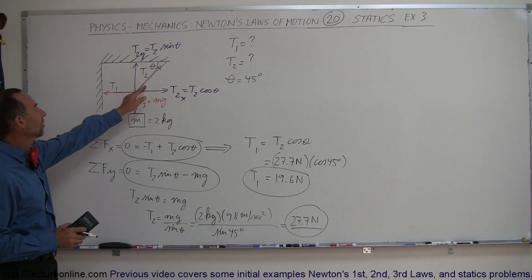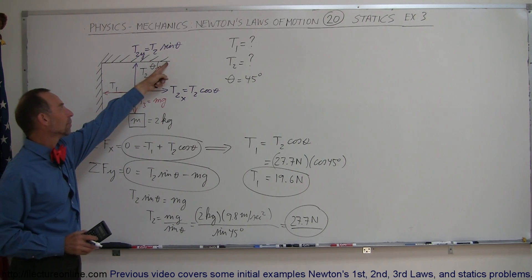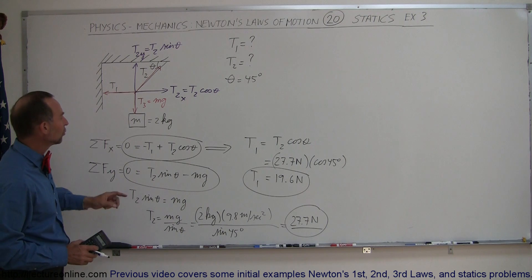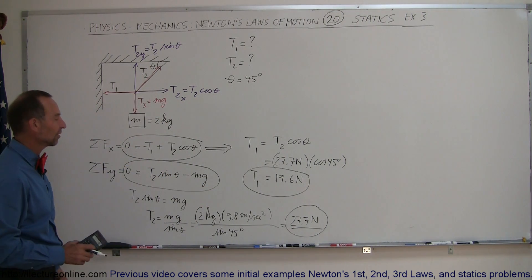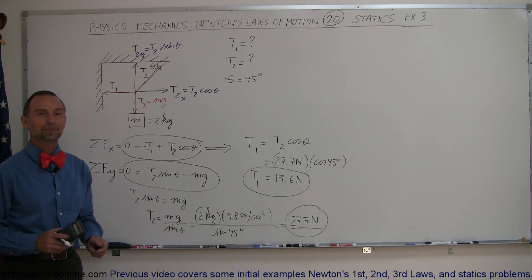So notice that T1, all it does is pull the mass to the right, keeping it from hanging straight down from the point where it's attached right here. That required 19.6 newtons, but T2 is still carrying most of the weight, so we have 27.7 newtons attributed to the tension in T2. And that is how you do that problem.